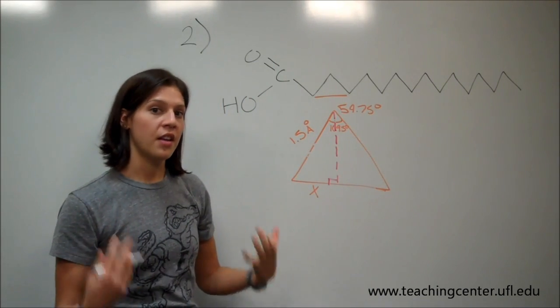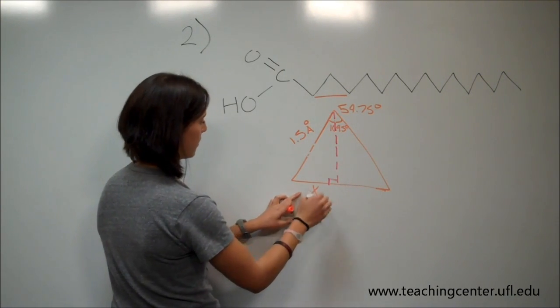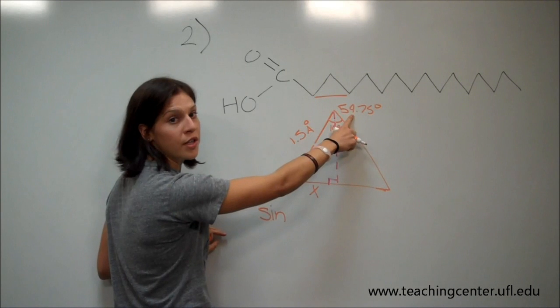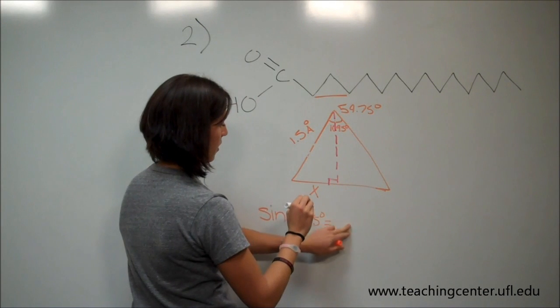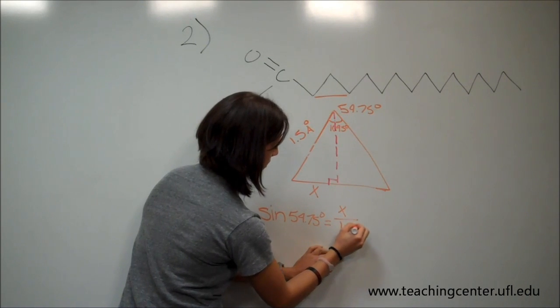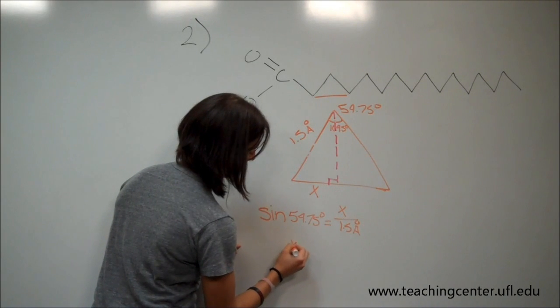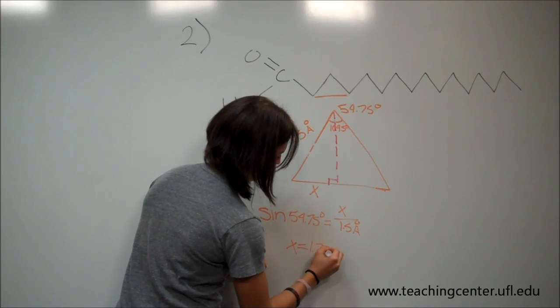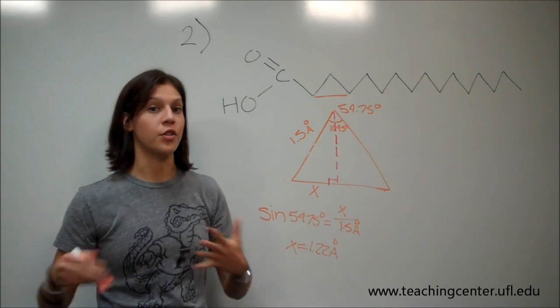So if you all remember SOHCAHTOA and sine, we use opposite over hypotenuse. Since we're solving for this, we're going to do sine of 54.75 degrees equals our opposite X over our hypotenuse 1.5 angstroms. And once you put this into your calculator, you're going to get X equals 1.22 angstroms or 0.122 nanometers.